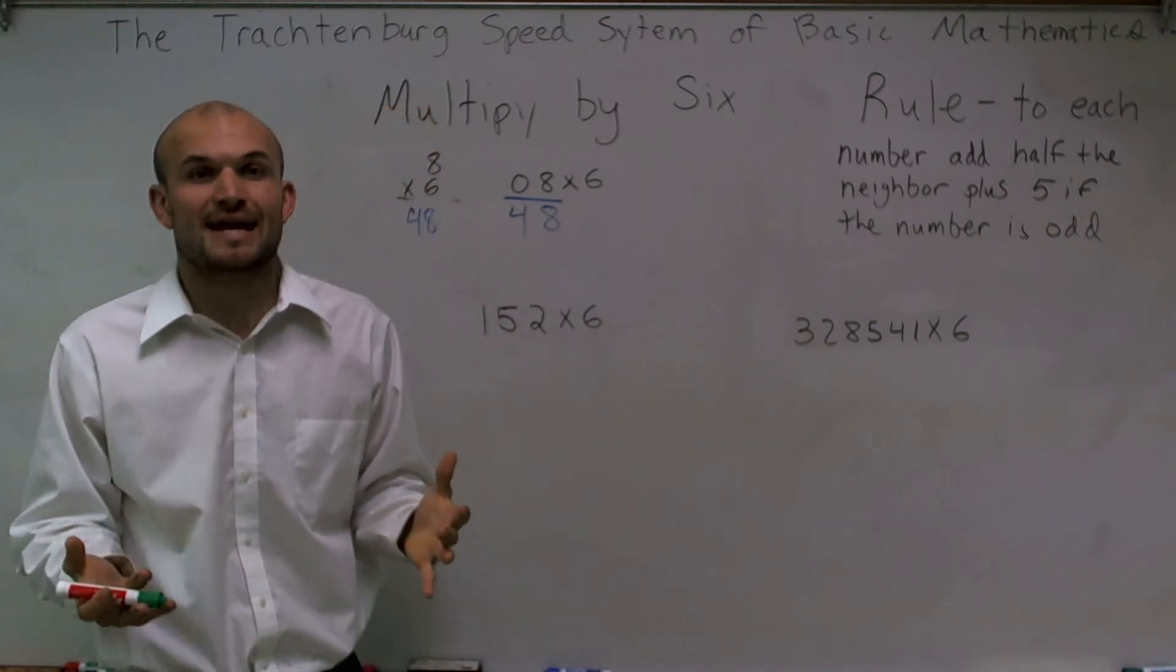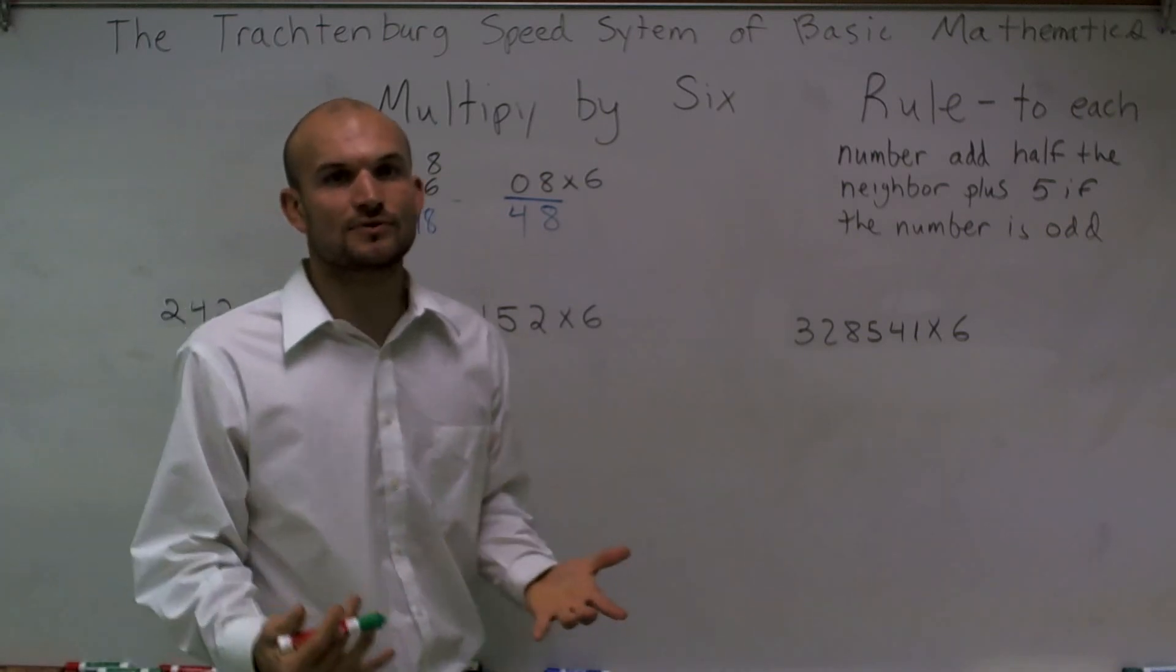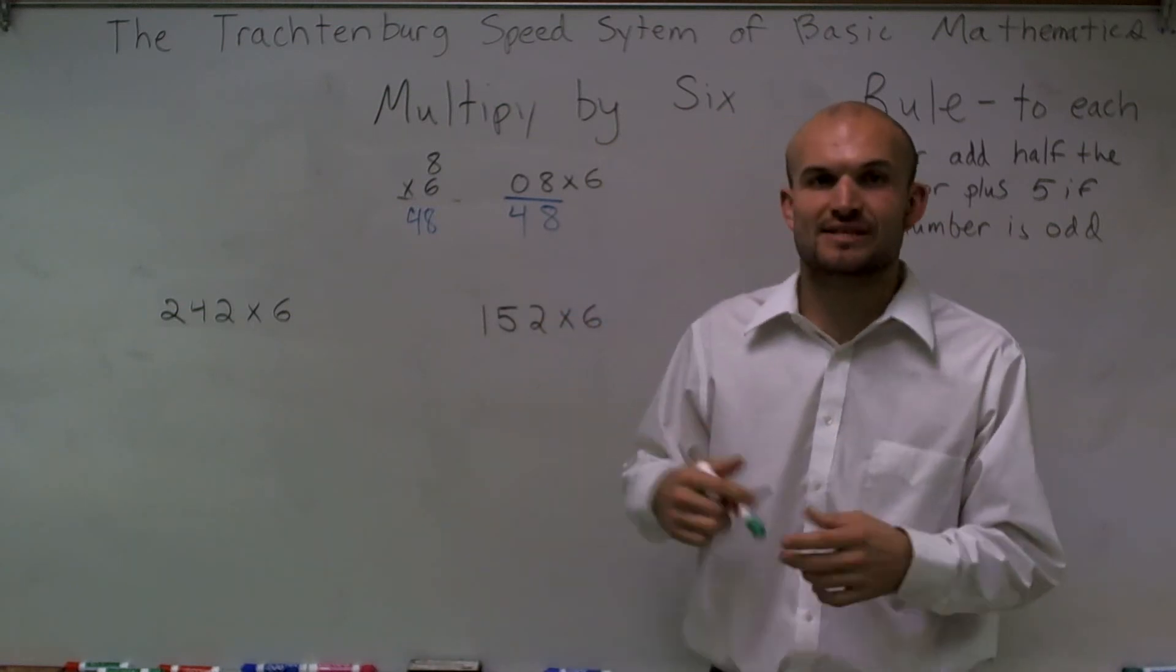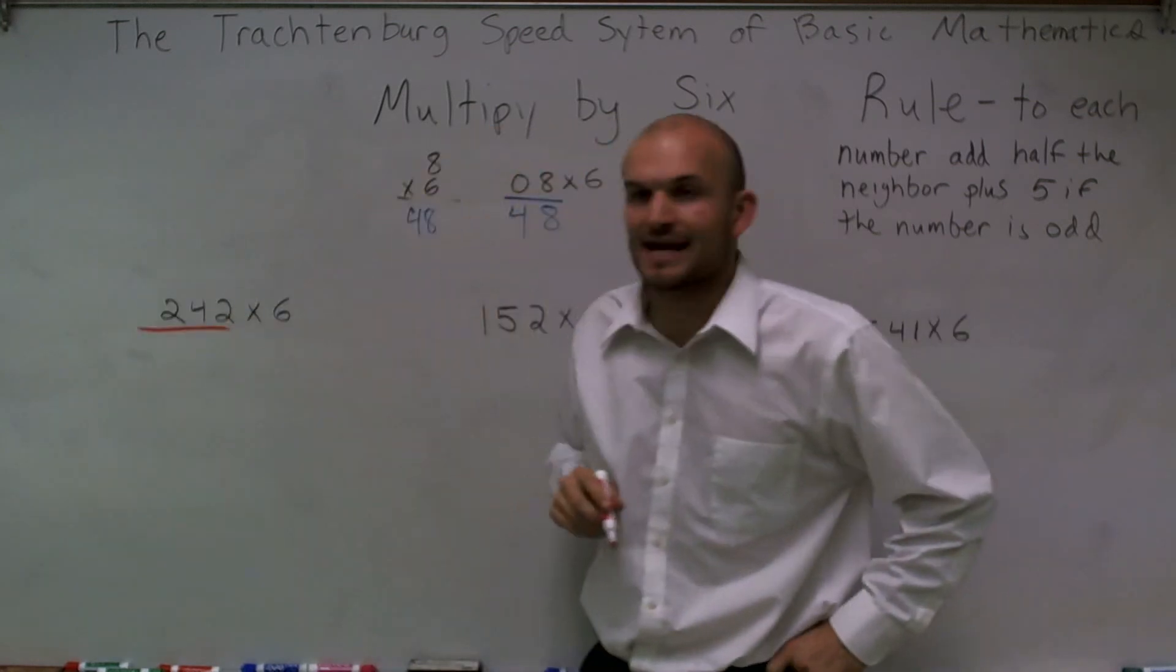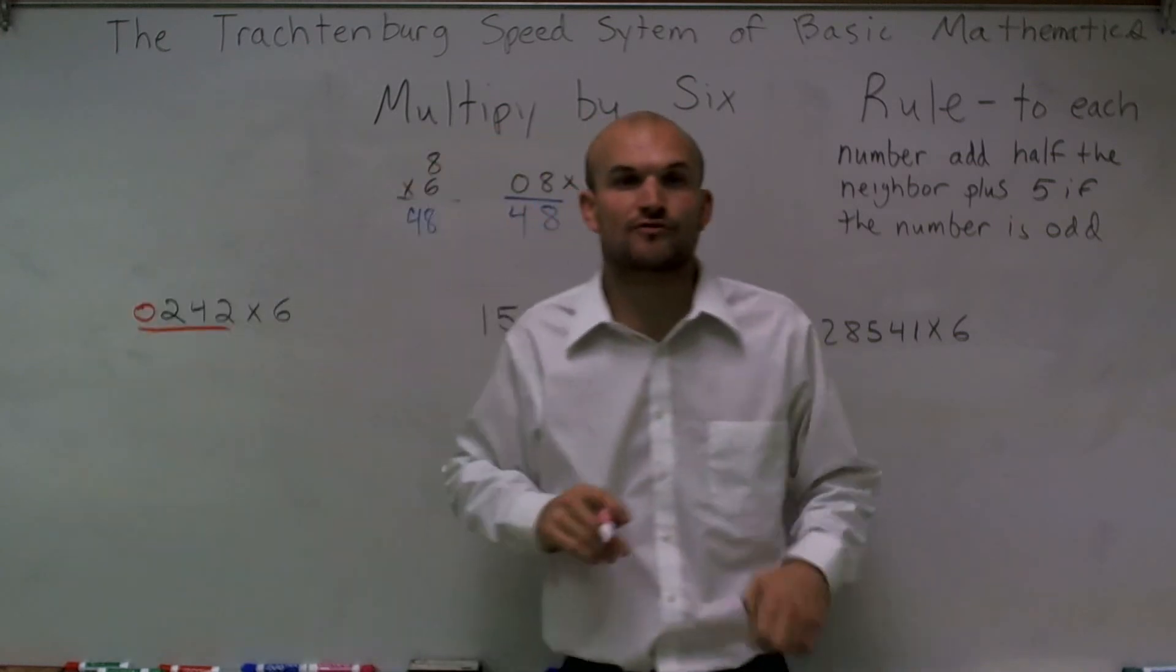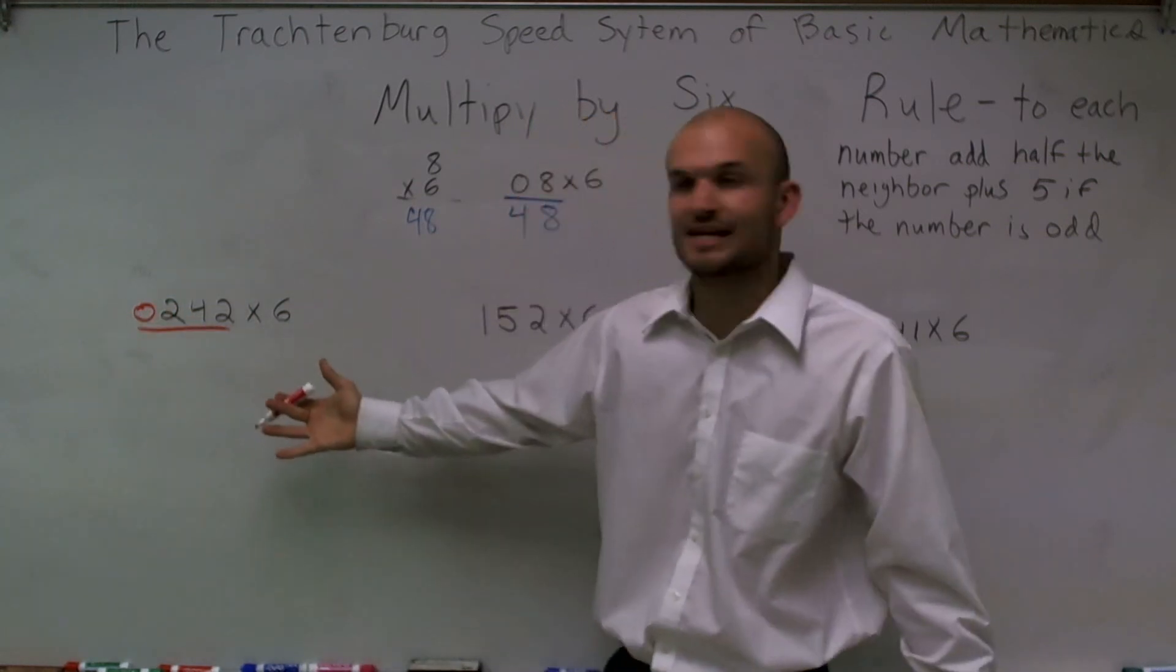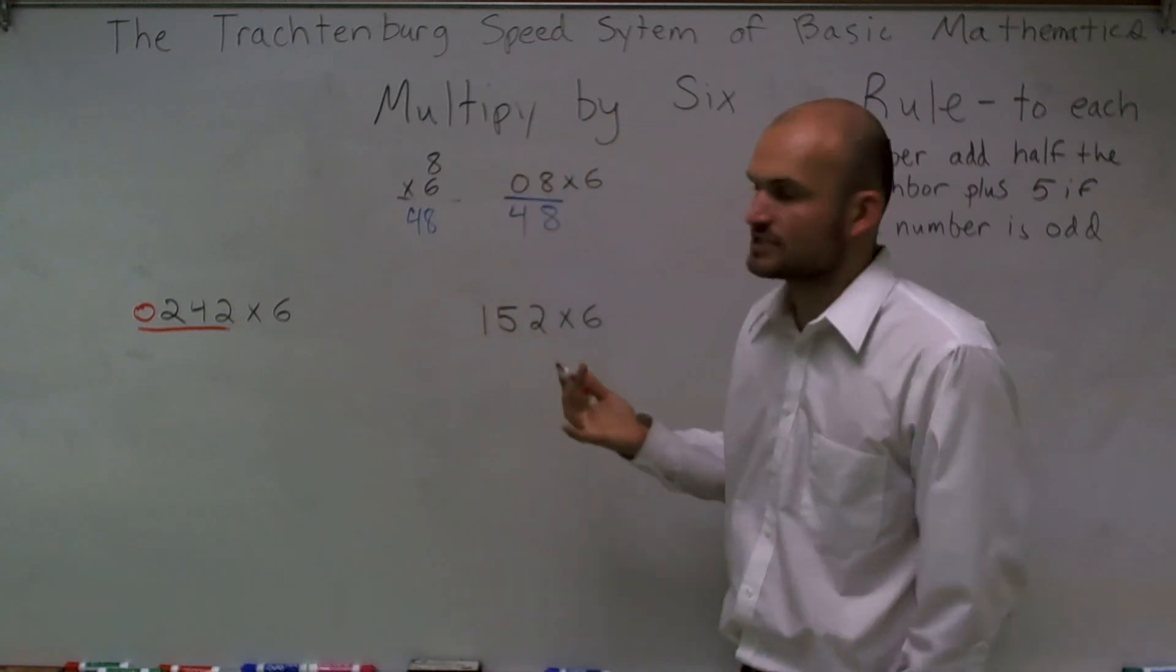Where this process comes in handy is when we're multiplying six times larger numbers. So let's go through a couple of processes, and I'll quickly go through the certain steps that you need to remember. On the Trachtenberg system, remember, we like to write our answers directly below. It's also helpful to put a zero in your front number to remind us that two is also a neighbor of zero. When putting a zero in front, that doesn't change the value of your number.